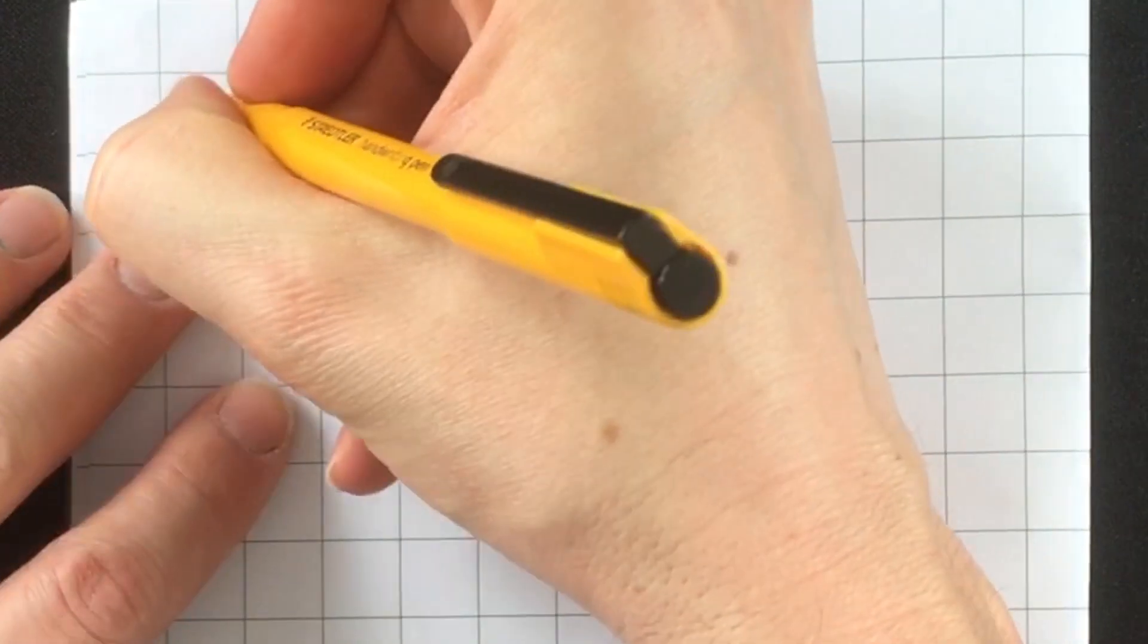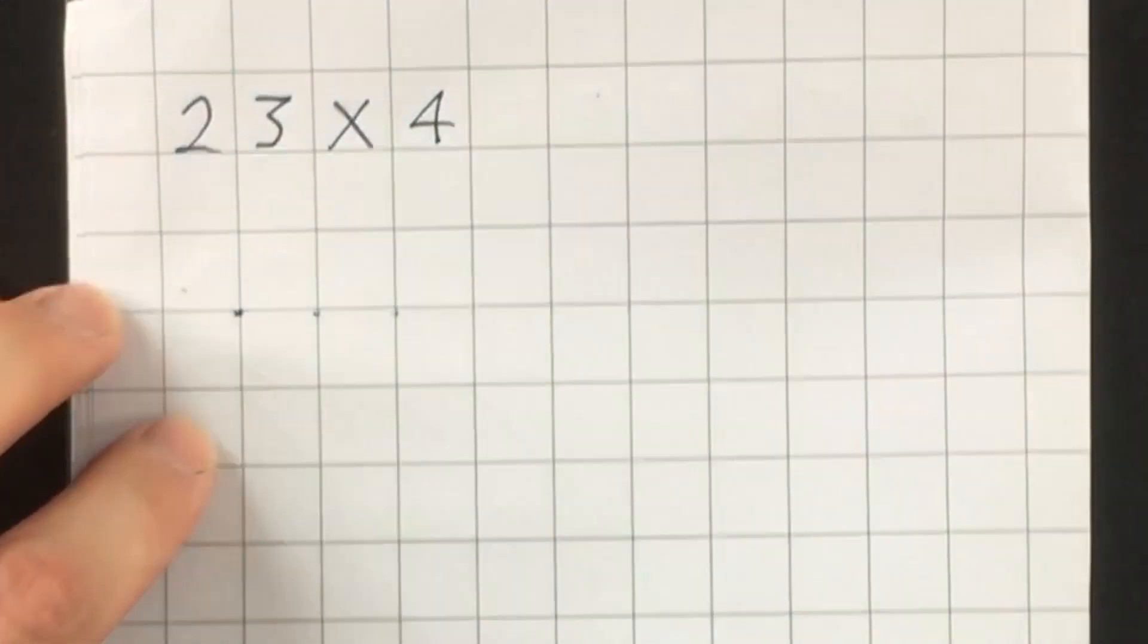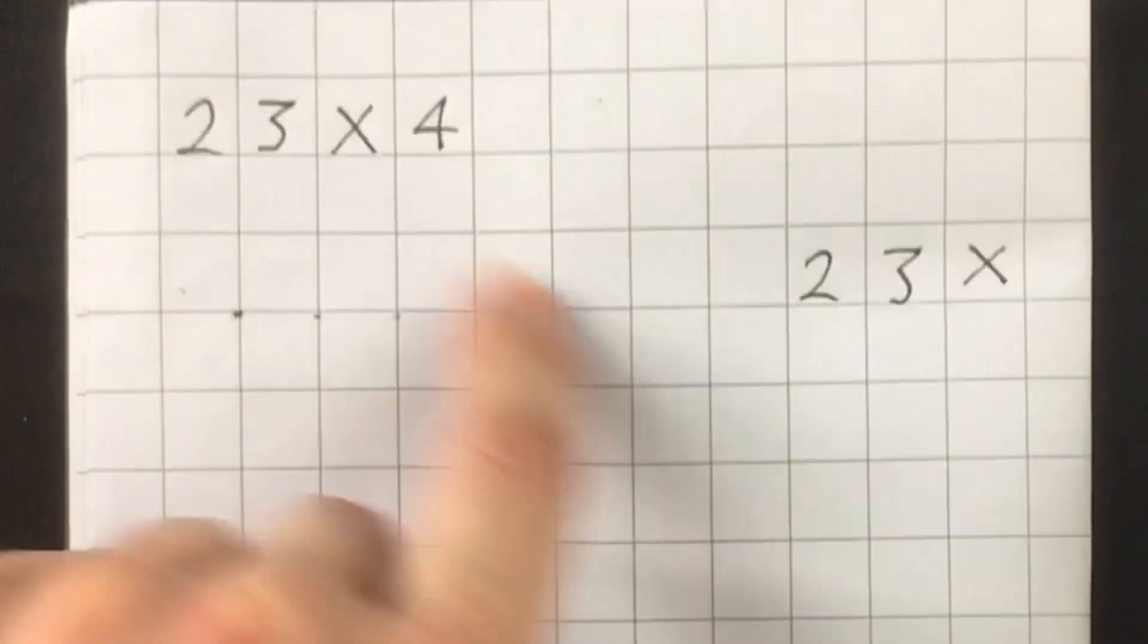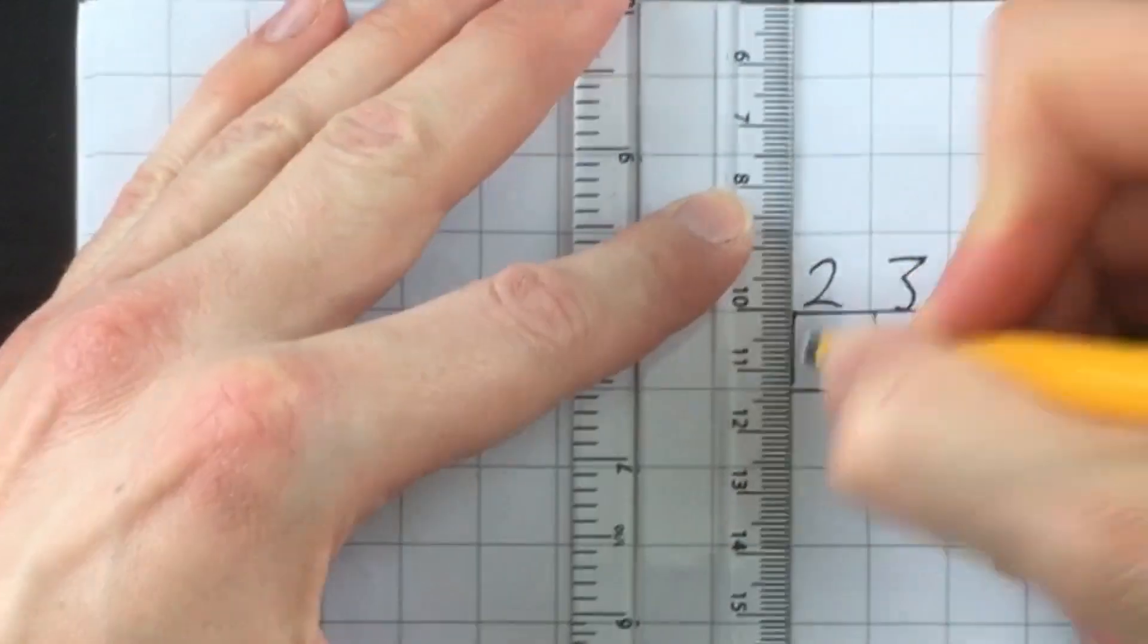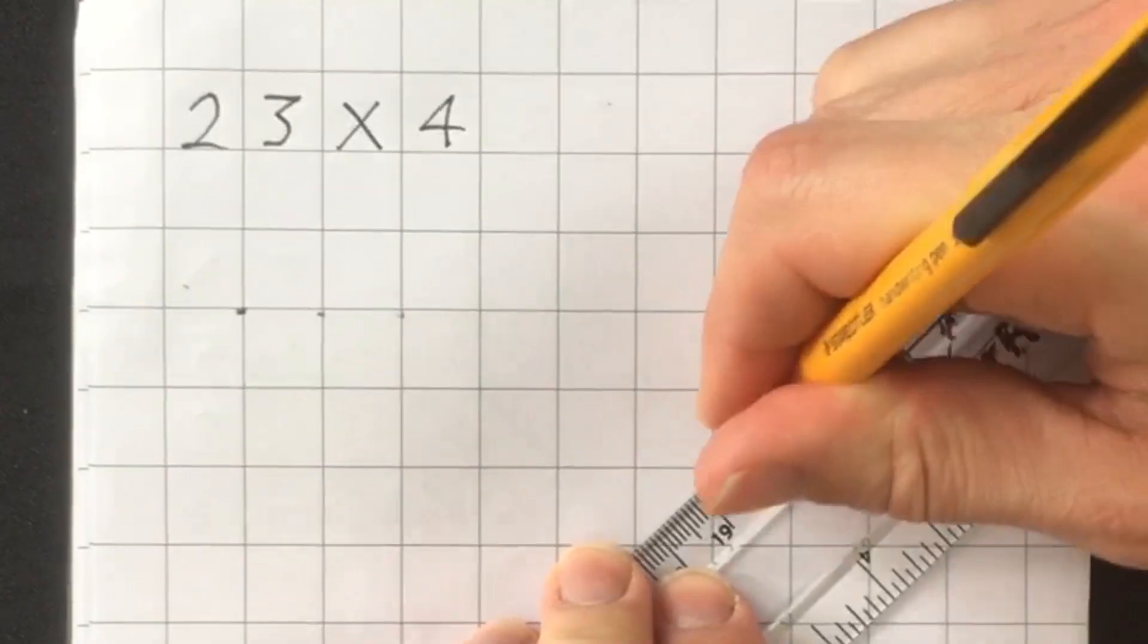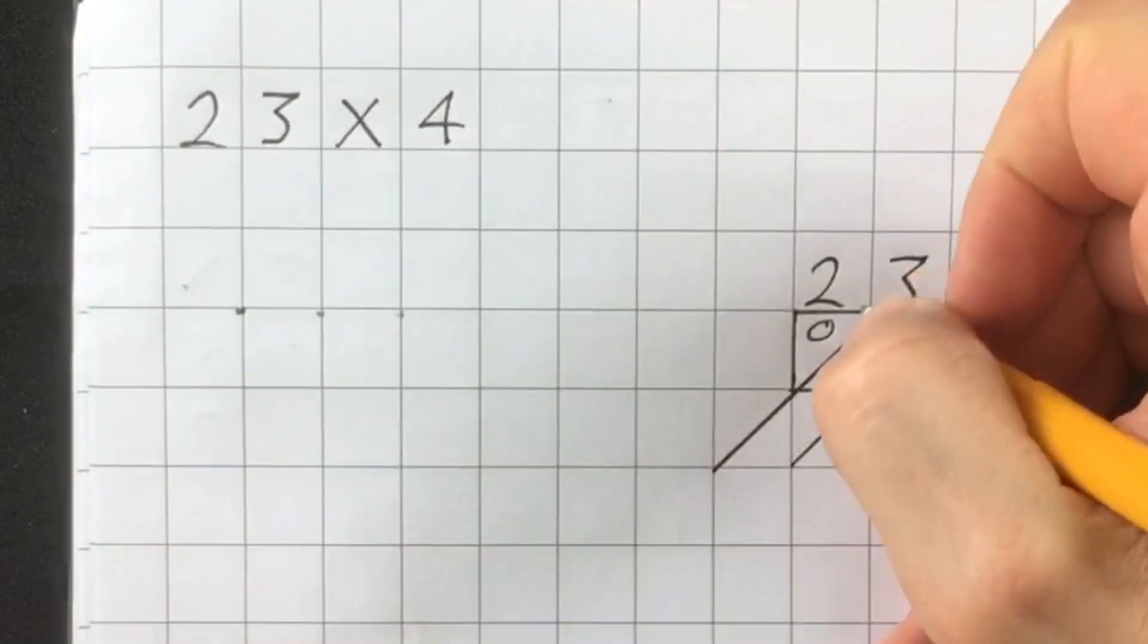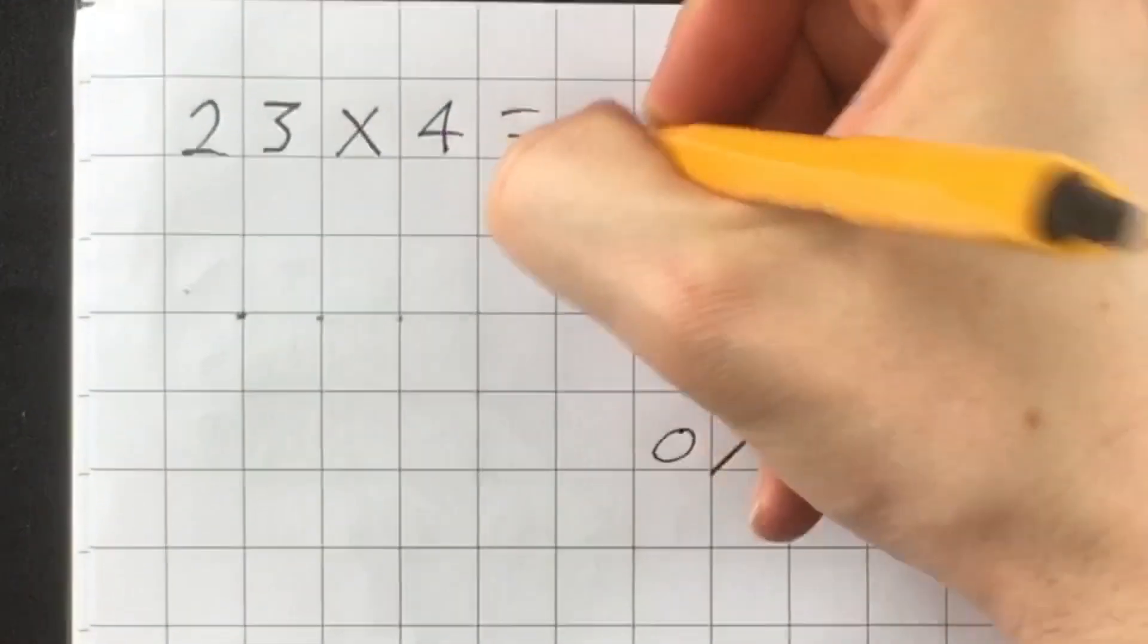A simpler question would be something like twenty-three multiplied by four. Like before, I put my times sign, I write my first number, one digit per box, twenty-three. And my second number is four. I draw my grid, which is only two squares this time. I do a diagonal line through my squares. And I multiply like I did before. Three times four is twelve. Two times four is eight. And I add up diagonally. Two, nine, zero. And the answer is ninety-two.